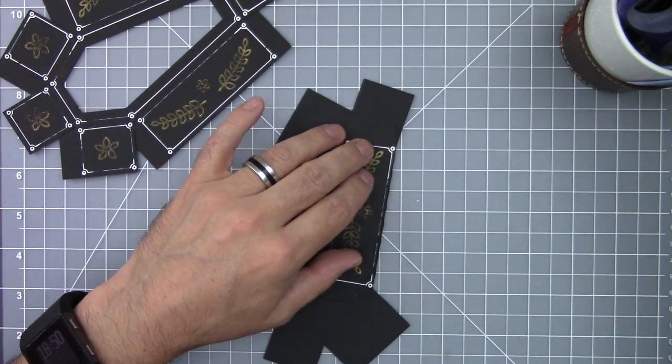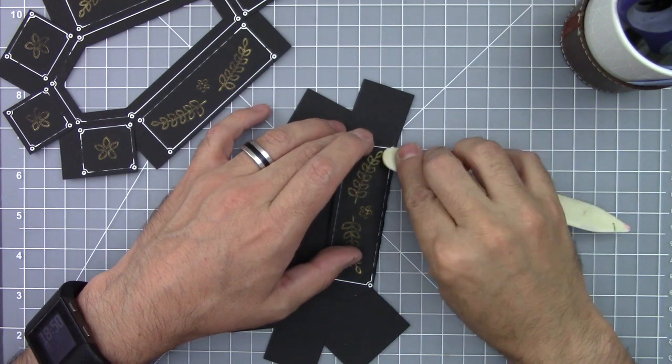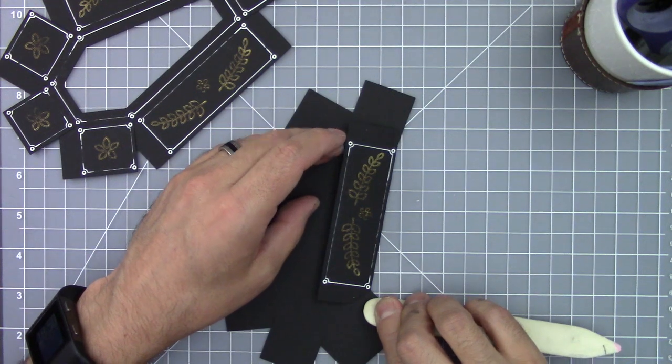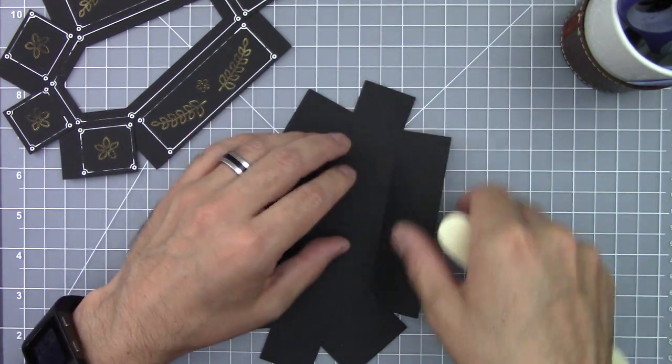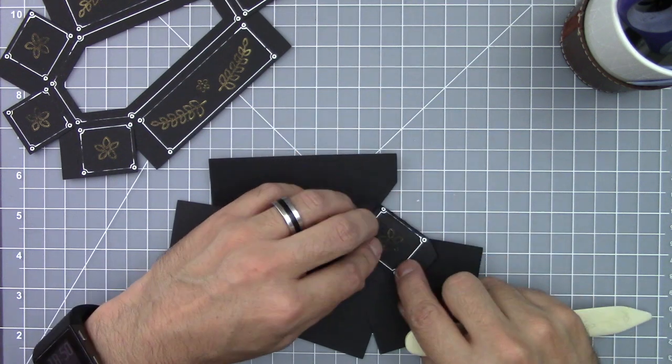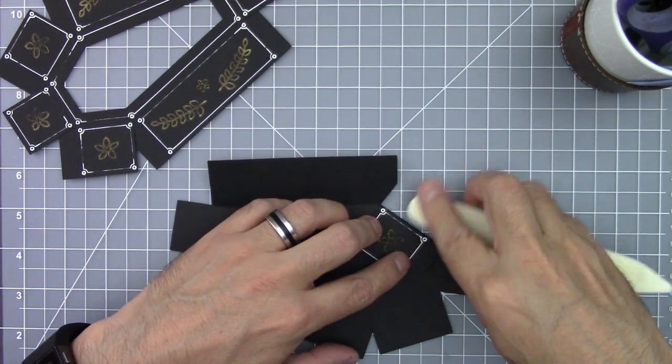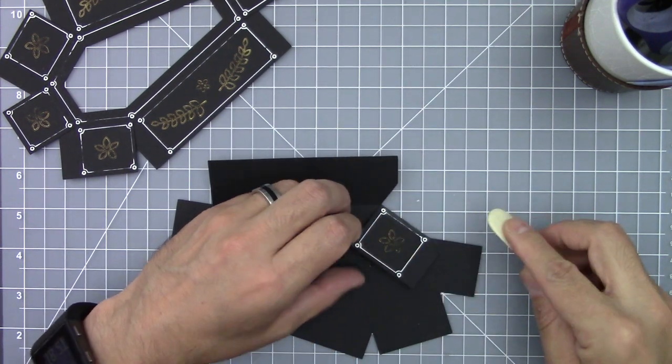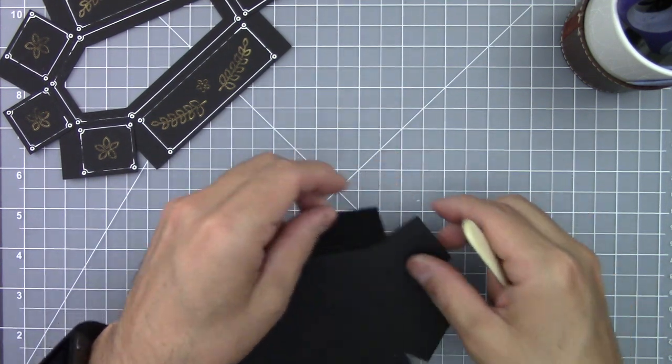Following the lines with the wrong side of the paper up, fold the side of the coffin and use a bone folder to crease the fold. Make sure not to go over the white line because sometimes the bone folder can erase the lines.